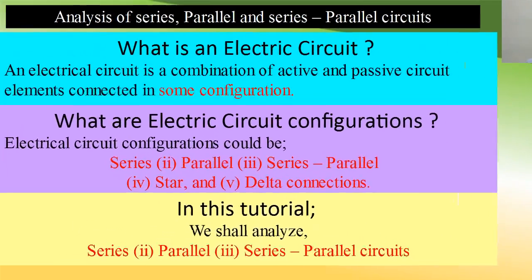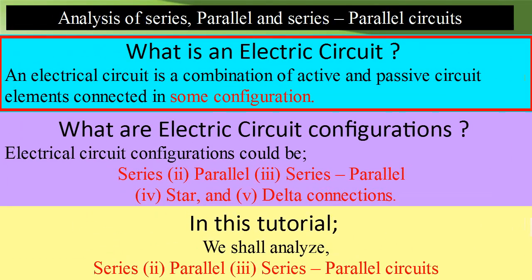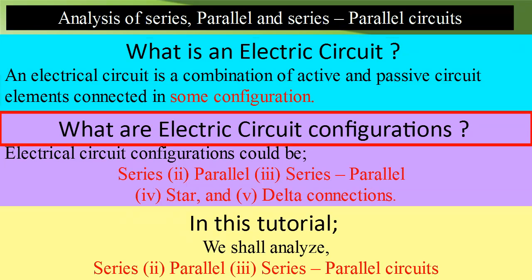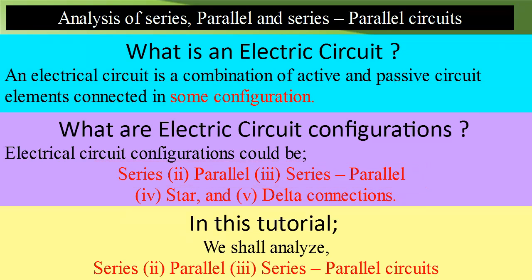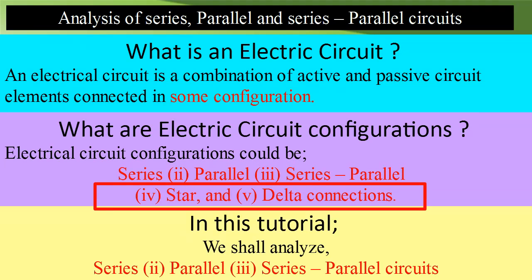We know that an electrical circuit is a combination of active and passive circuit elements connected in some configuration. The different configurations we find are series, parallel, series-parallel, star, and delta connections.